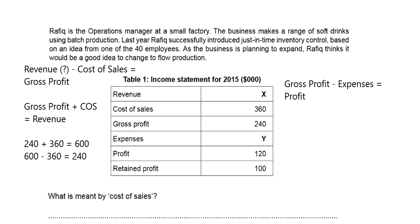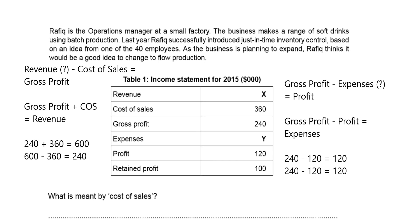Now for Y, which is expenses. We already have our gross profit and our profit figure. In usual circumstances we'd have gross profit and expenses to calculate profit, but again this is testing numeracy skills. The usual formula is gross profit minus expenses equals profit, but we must rework it to find expenses. Because they're making a positive profit, expenses must be less than gross profit. So $240,000 minus the profit of $120,000 gives us $120,000 in expenses. Verifying: $240,000 minus $120,000 expenses equals $120,000 profit — correct.